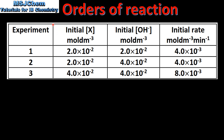Let's have a look at one more example. Here we have the initial concentration of X, the initial concentration of the OH⁻ ion, and the initial rate of reaction. In experiments 1 and 2, the concentration of X remains constant and the concentration of OH⁻ is doubled. Doubling the concentration of OH⁻ has had no effect on the rate of reaction, therefore the reaction is zero order with respect to OH⁻.